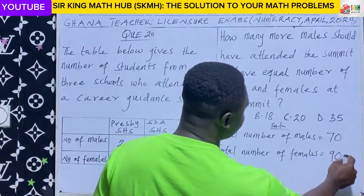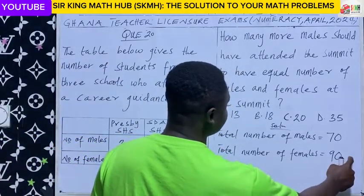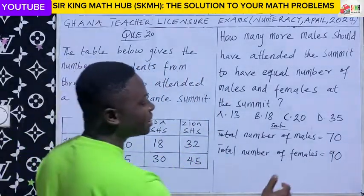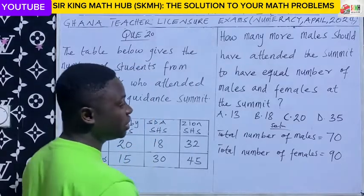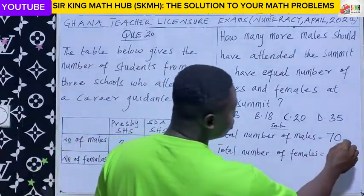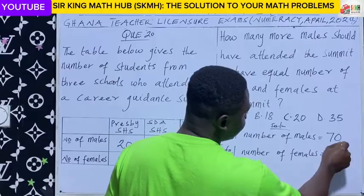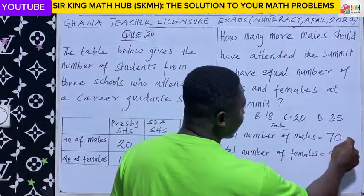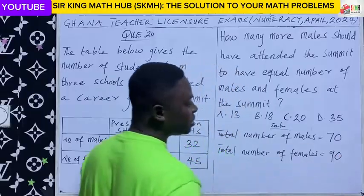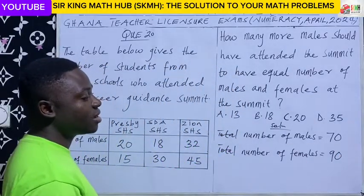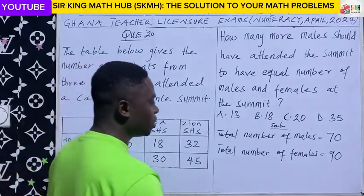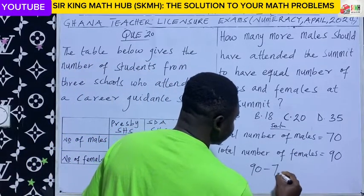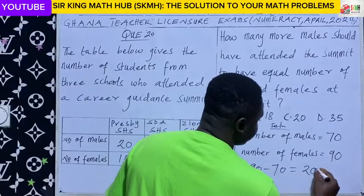As you can see, there were more females present than males at the summit. To get an equal number, we need to add a certain number to 70 to get to 90. We can do this by finding the difference: 90 minus 70.